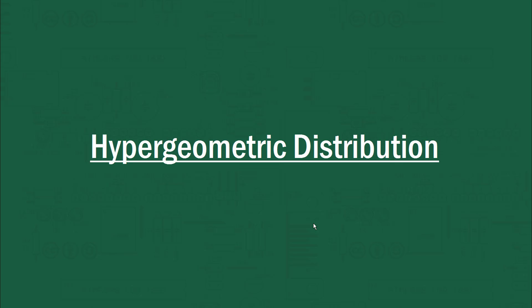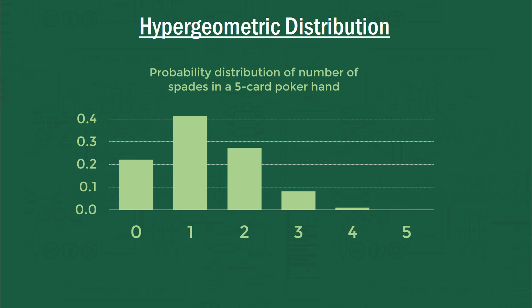Welcome to the third video in this series on probability distributions. This one today is the hypergeometric distribution. I've got a feeling this one might stir up a little bit more interest than the others, perhaps due to its relevance to card playing and in particular poker. The classic example of a hypergeometric distribution is a five card poker hand, and here I've got the probability distribution of the number of spades in a five card poker hand.